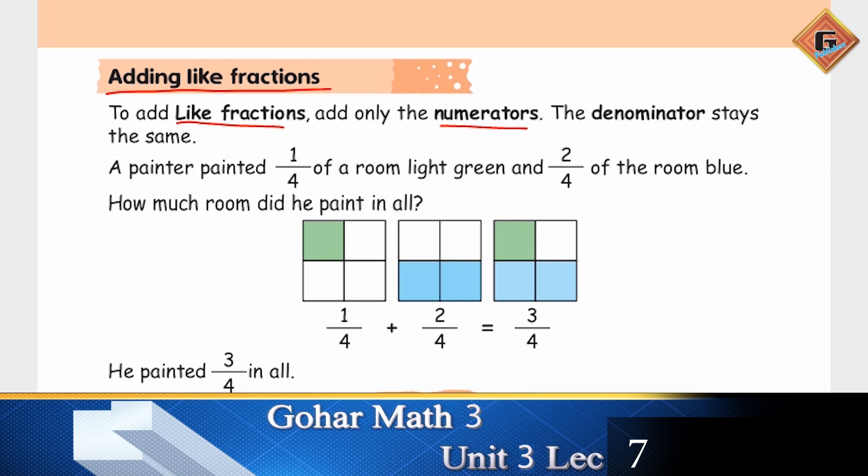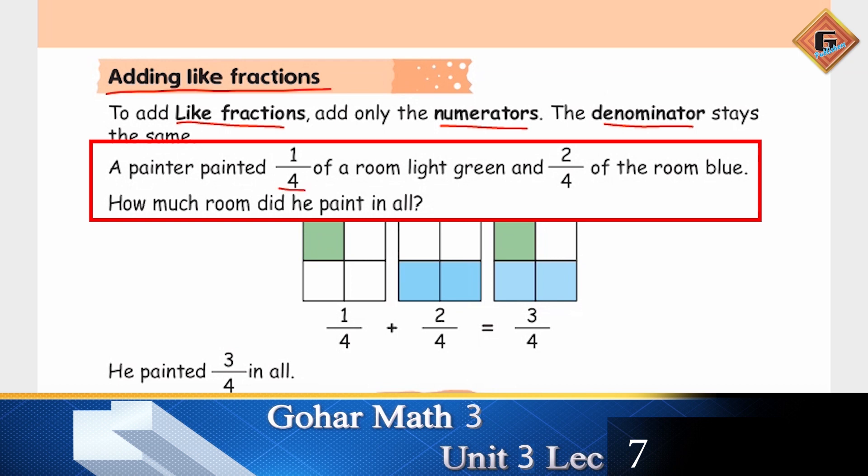Let's look at an example. A painter painted one over four of a room light green and two over four of the room blue. You are going to tell how much room did he paint in all.